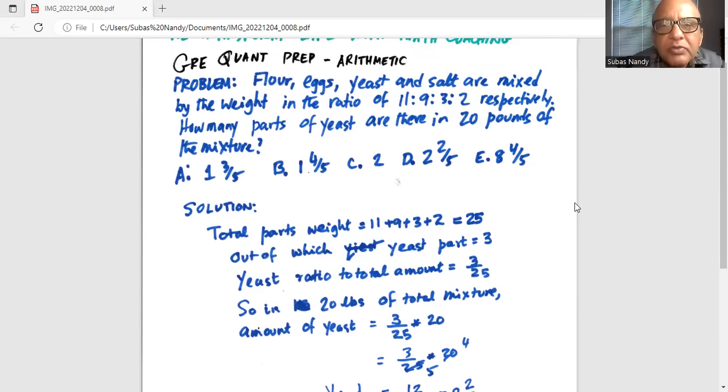Okay, so total parts weight is 11 plus 9 plus 3 plus 2, which is 25. 11 plus 9 is 20 plus 3 is 23 plus 2, 25 parts, out of which yeast is in 3 parts. So yeast ratio in the total amount of parts is 3 parts over 25 parts.